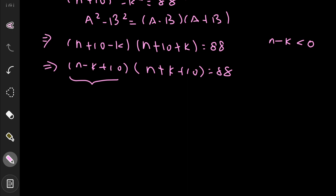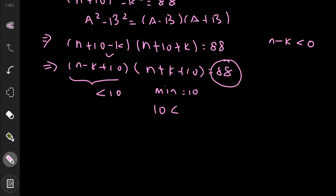So the first bracket (n − k + 10) is always less than 10. For the second bracket (n + k + 10): since n and k are both positive integers, its minimum value is 10, meaning it always remains greater than or equal to 10. This range helps us match each bracket to the appropriate factor of 88.